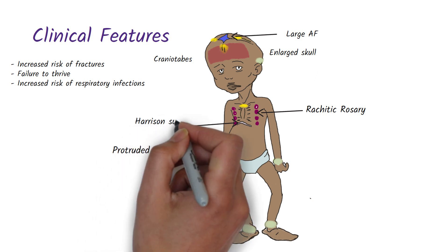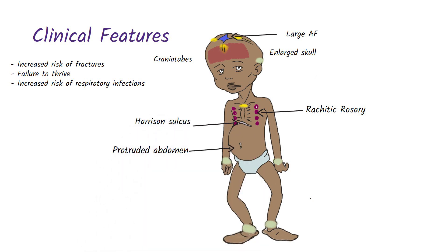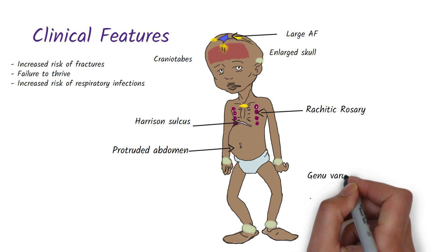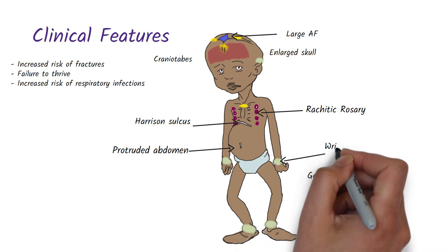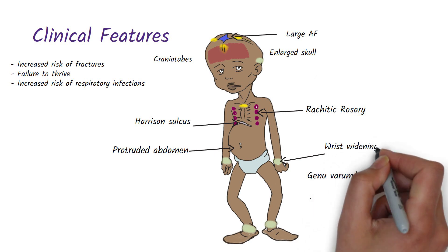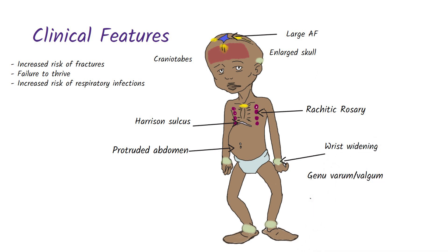The chest features include rachitic rosary due to enlarged costochondral junctions, Harrison sulcus due to pulling of the soft ribs by the diaphragm. Limb features include genu varum and genu valgum deformities, wrist widening because the growth plate cartilage and osteoid expand without mineralization of the bone matrix, so the bone width increases at the growth plate, bowing of the tibia and double malleoli.